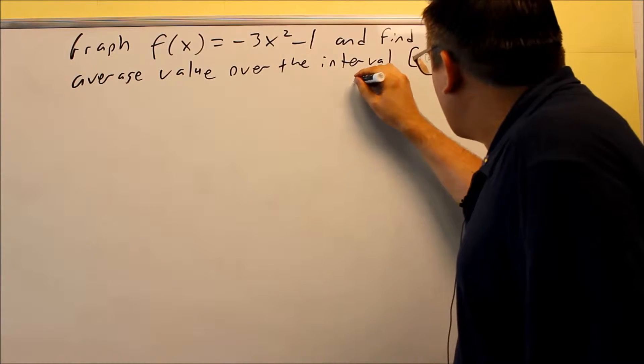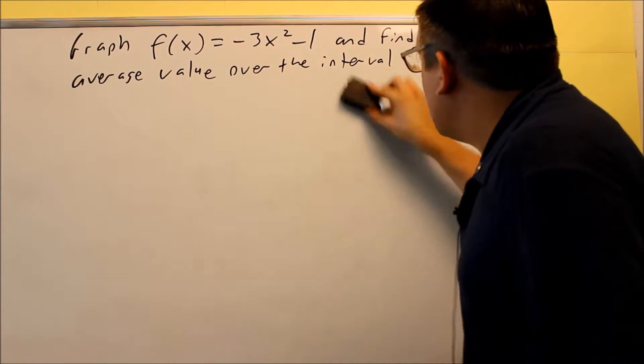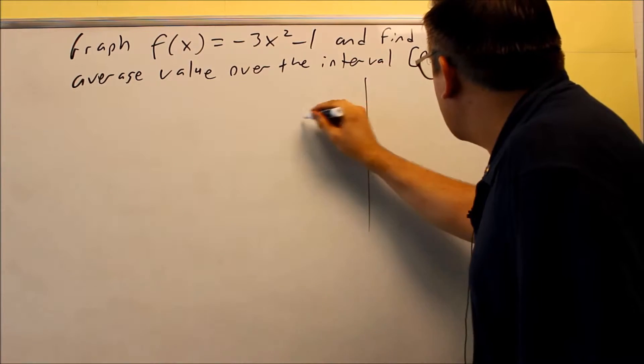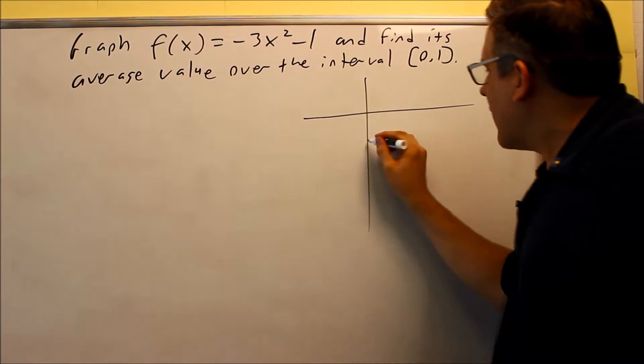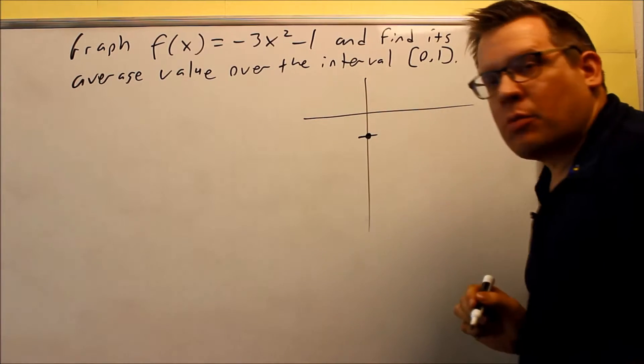Okay, so when we graph this one, we know that it's going to be starting from negative 1, so let's draw it this way. So if I put 0 in here, I get negative 1, and that's going to end up resulting right here.